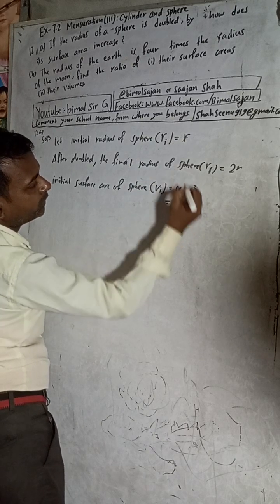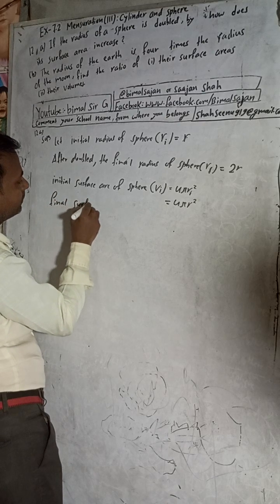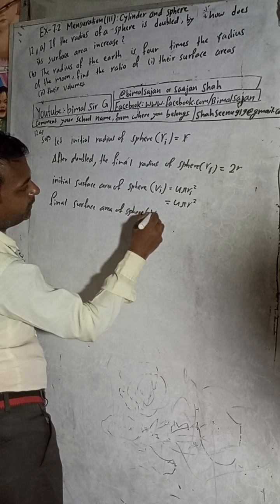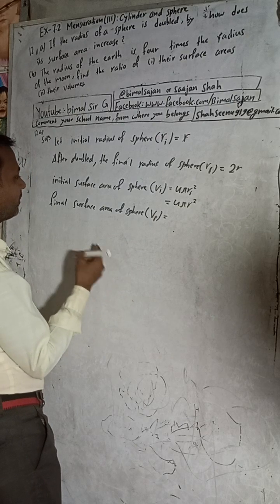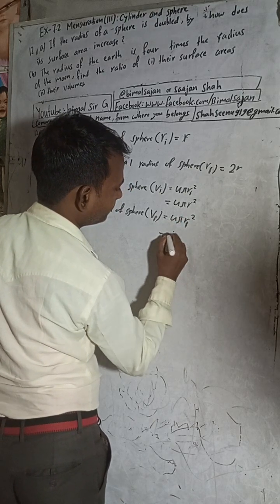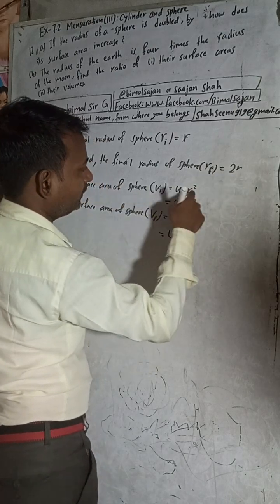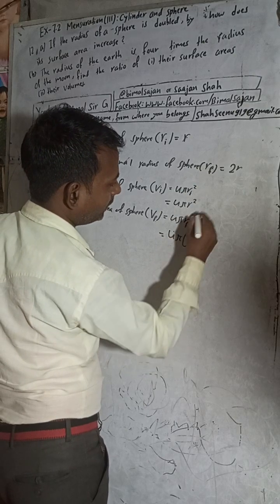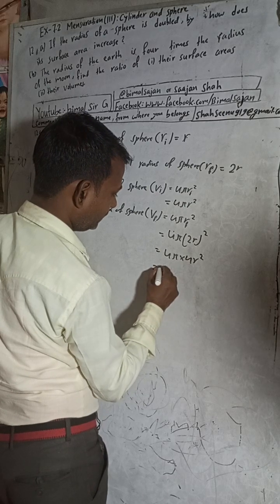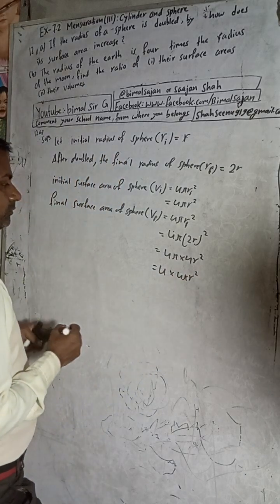Final surface area of the sphere: the final radius is double R, i.e., 2R. So the final surface area = 4π(2R)² = 4π × 4R² = 16πR², which can be written as 4 × 4πR².